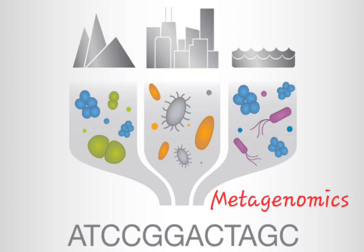Metagenomic DNA sequencing is simply running all nucleic acids in a sample, which may contain mixed populations of microorganisms, and assigning these to their reference genomes to understand which microbes are present and in what proportions.